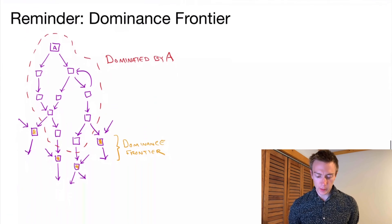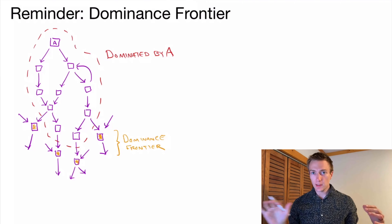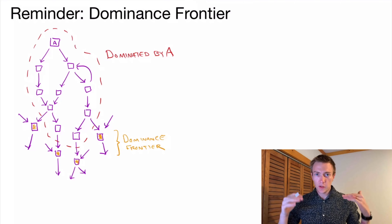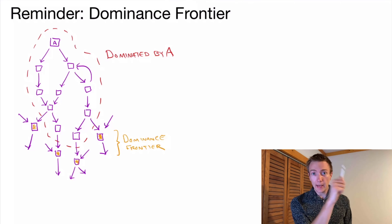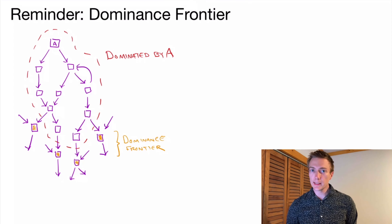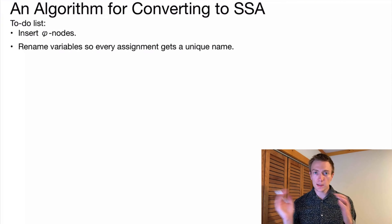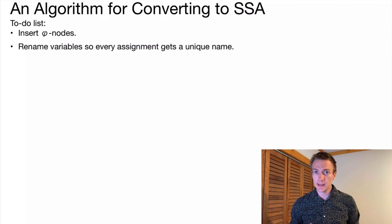Here's a cartoon to remind you what a dominance frontier looks like. All the nodes that are dominated by a given block A are not in the dominance frontier. The dominance frontier occurs just beyond that — the blocks that are reachable by a single jump from the set of nodes dominated by A, but are not dominated by A. That is, they have edges in from somewhere else in the CFG. The algorithm for converting to SSA uses the dominance frontier in two main steps. The first step is to insert phi nodes — use the dominance frontier to figure out where phi nodes have to go. The second step, after inserting all that, is to rename all the variables so that assignments are unique and we get into SSA form.